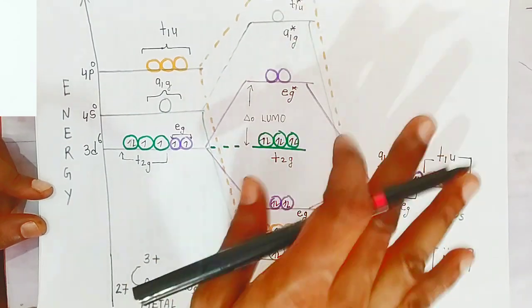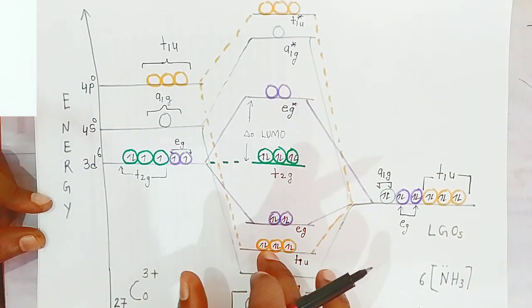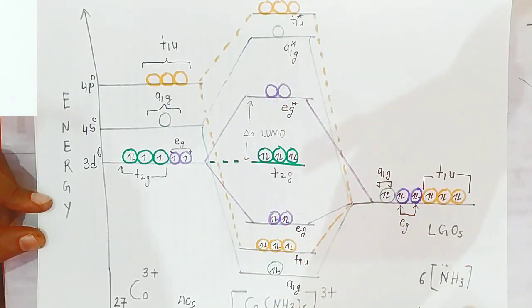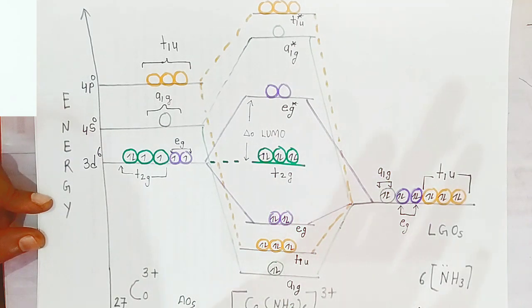In this complex, there are no unpaired electrons, which means it is diamagnetic in nature. Because all electrons are involved in bonding interactions, this complex also has some ionic character. This is the molecular orbital theory explanation of hexaamminecobalt(III).